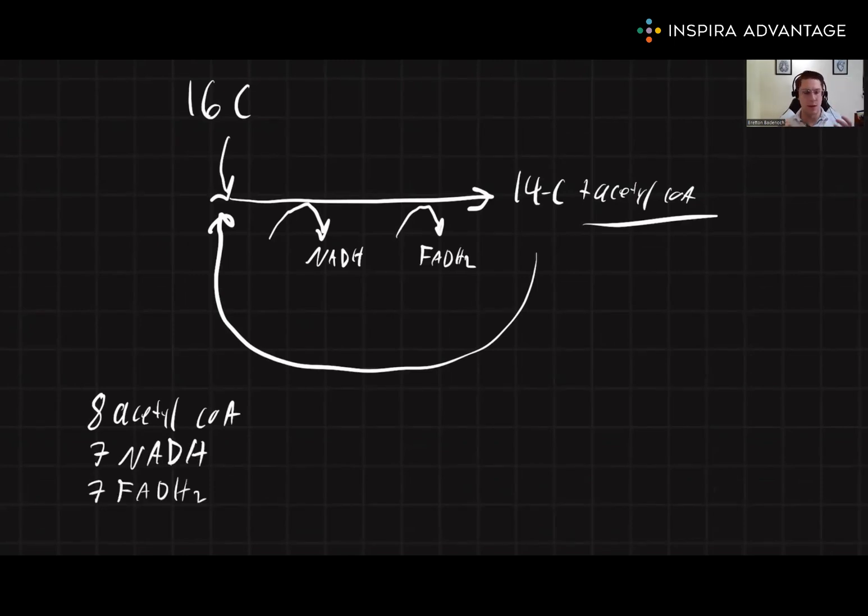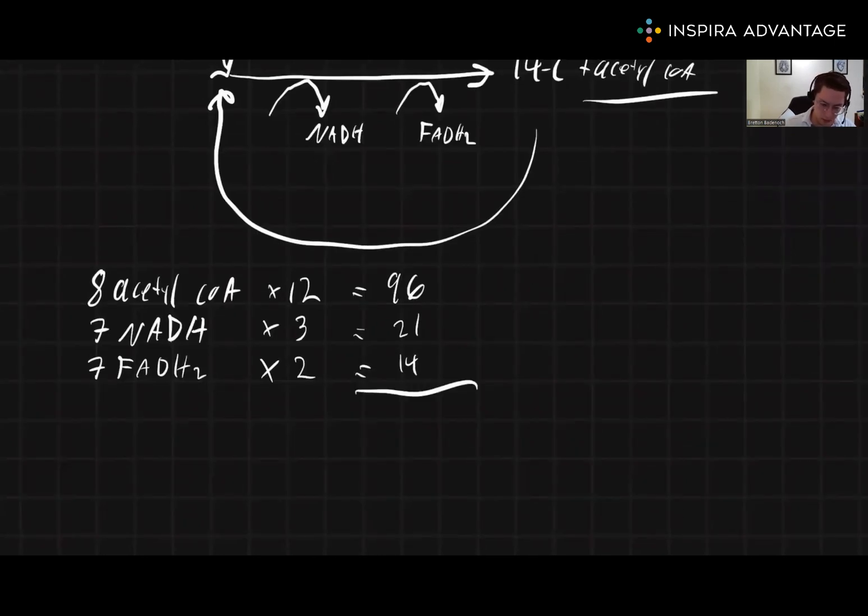And I will multiply this by those ATP numbers we memorized. So we know each acetyl-CoA is worth 12 ATP. Each NADH is worth three ATP. And each FADH2 is worth two ATP. Multiplying these out, we get 96 ATP, 21 ATP, and 14 ATP, respectively. If we sum these up, we get 131 minus two for activation step. And this is going to equal 129 ATP per palmitic acid.